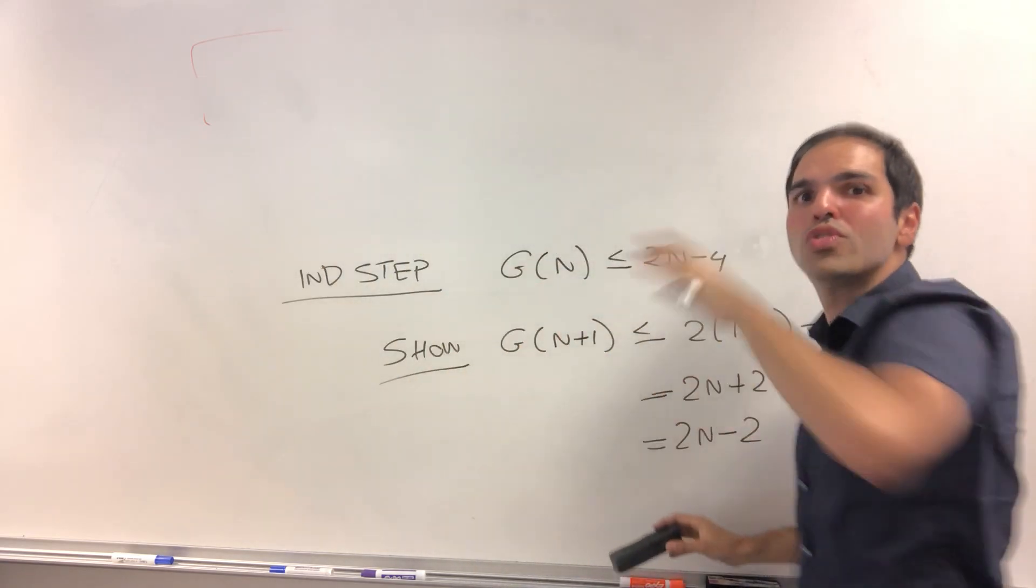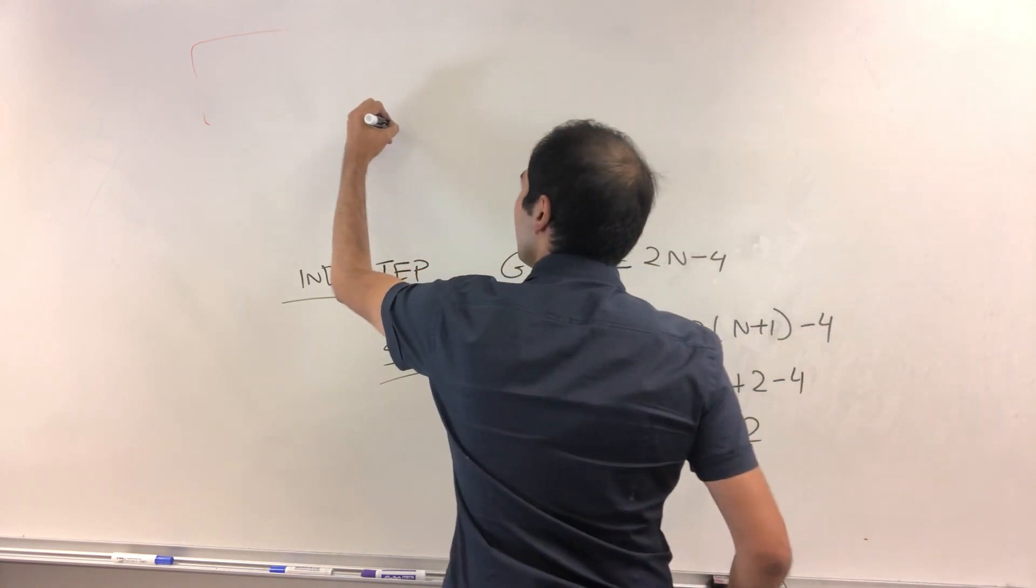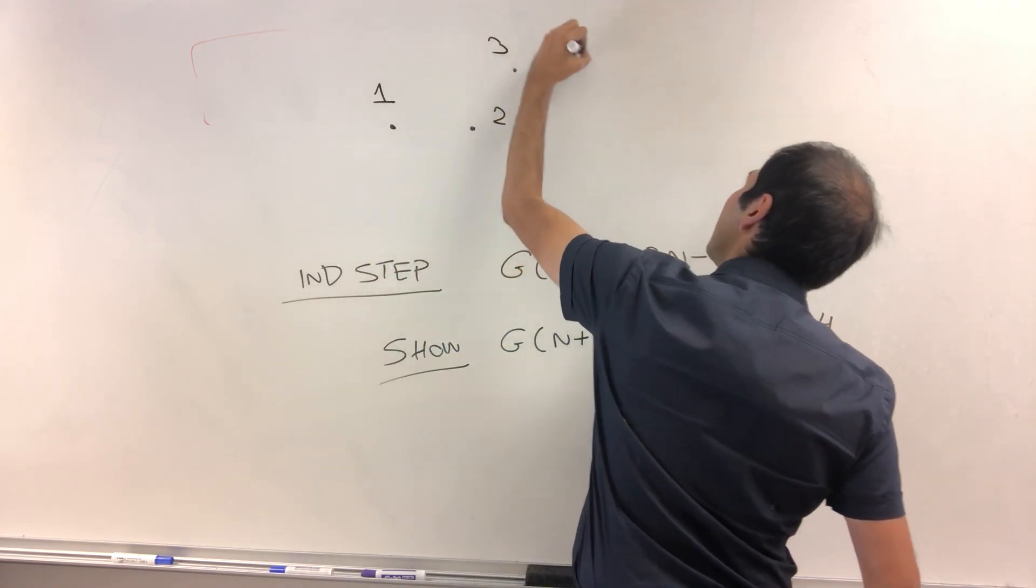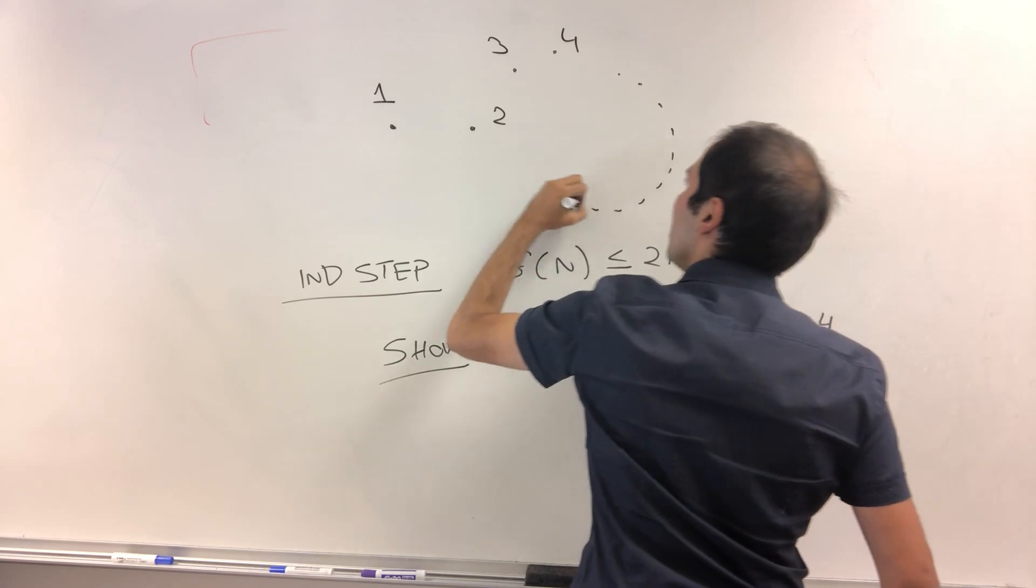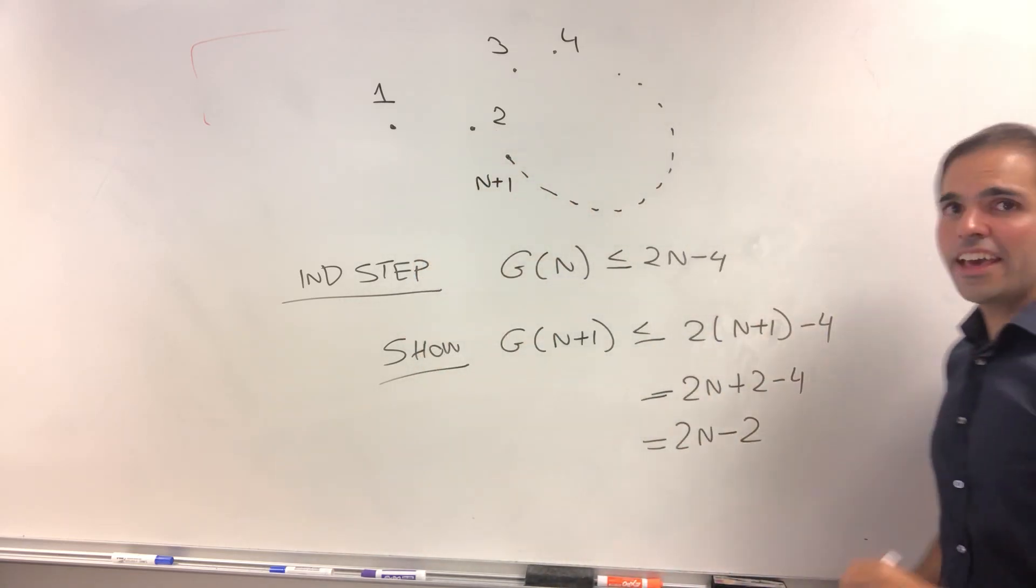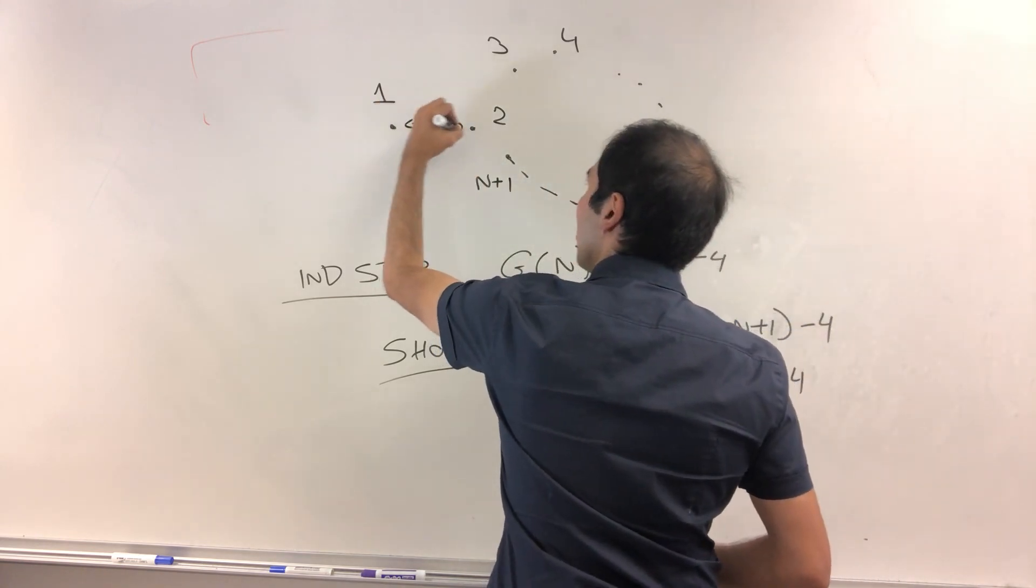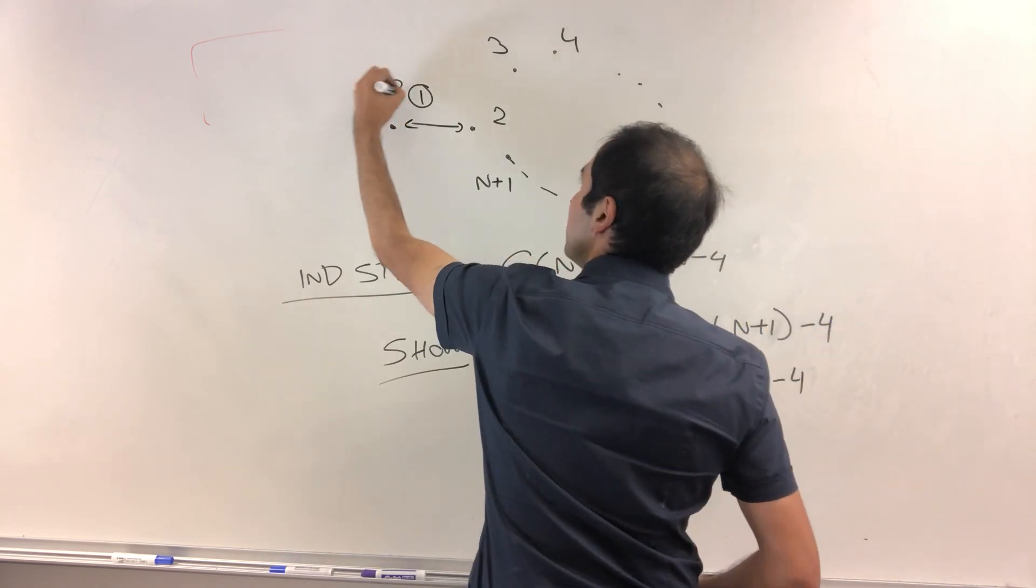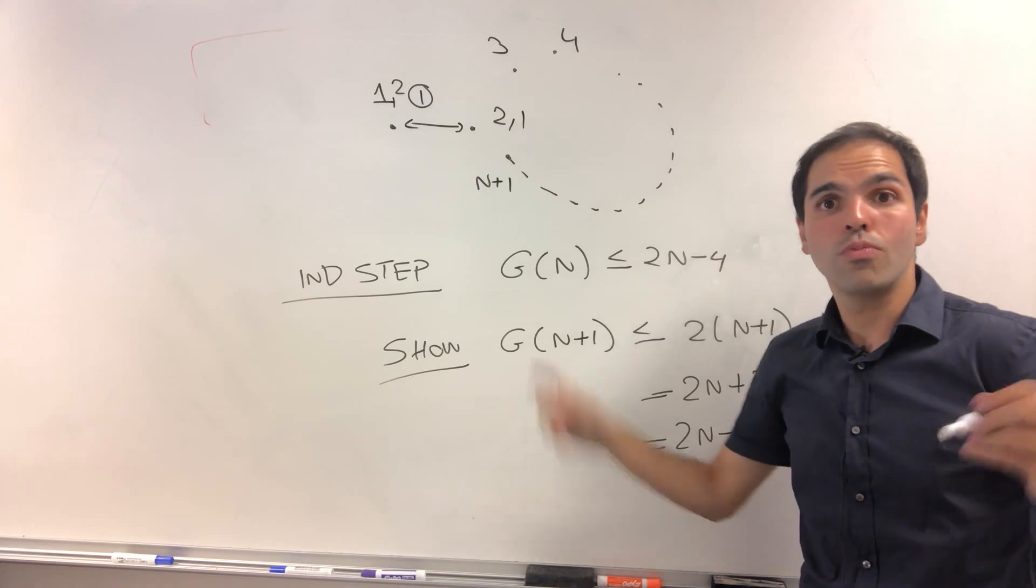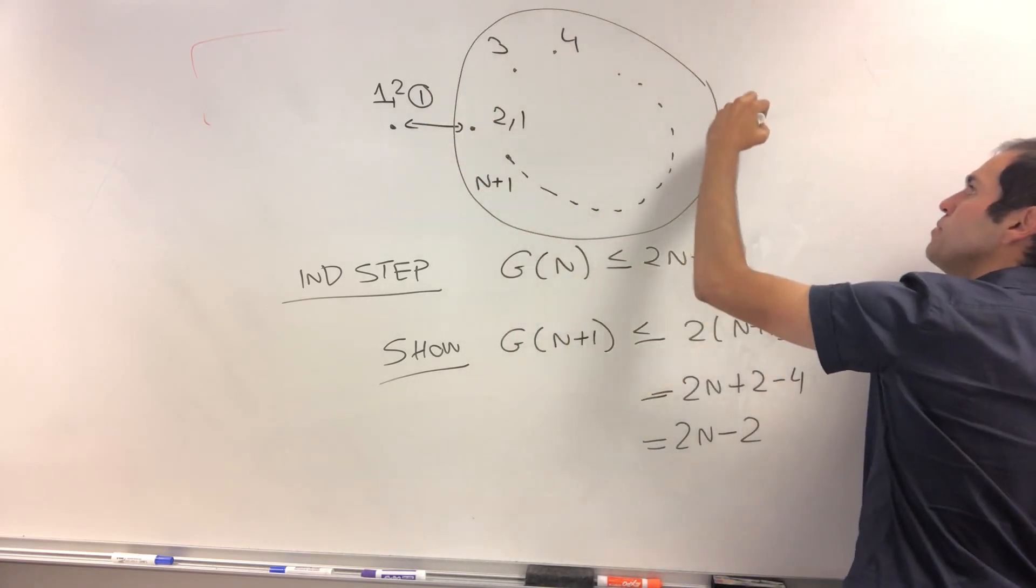And the trick is really just to separate out the first person from all the other ones. So suppose this is one and then those are the other people. So two, three, four, dot, dot, dot, up to n plus one. Then what can we do? Well, look. The first call is simply one calling two, then one knows two's gossip. Two knows one's gossip. And the trick is, well, notice those are n people.